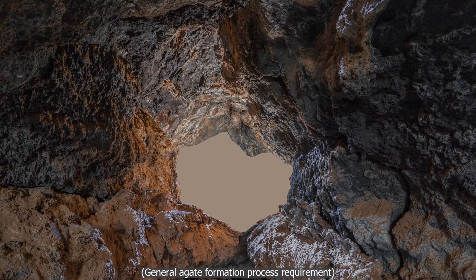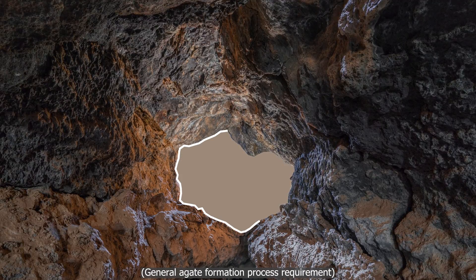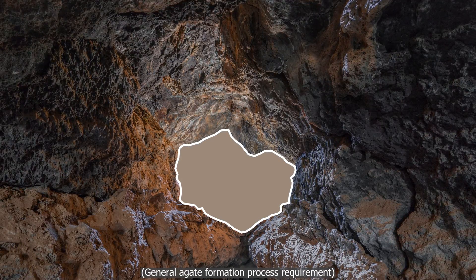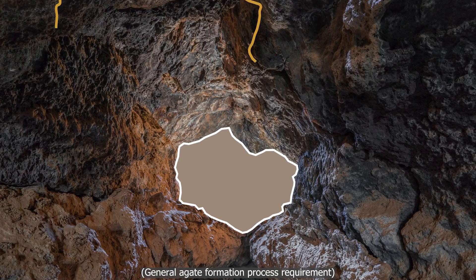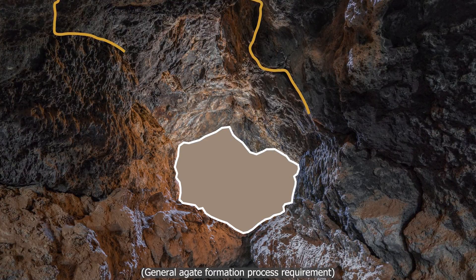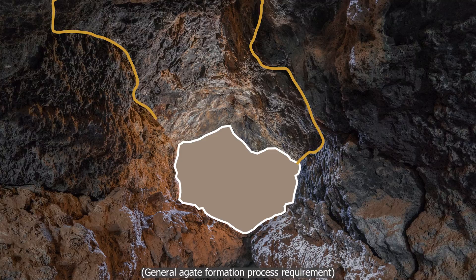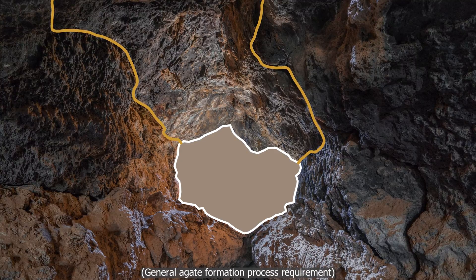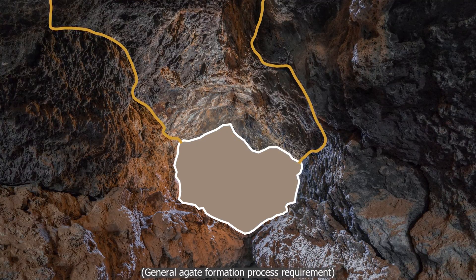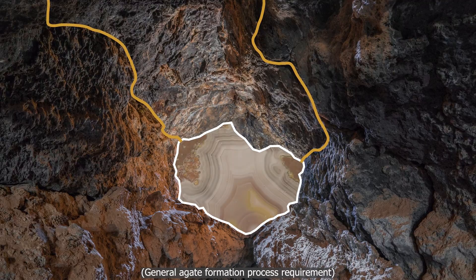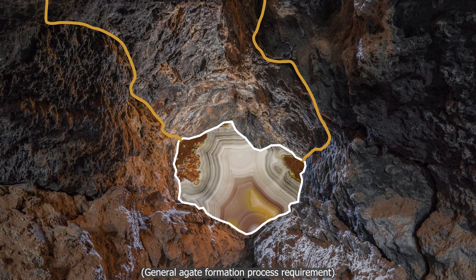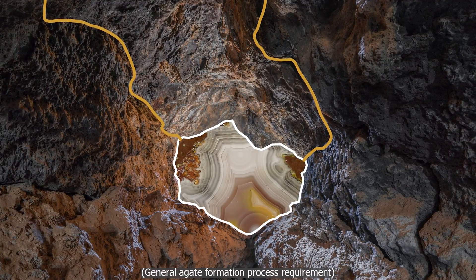Agates can form in any kind of environment where there are empty cavities in rock. Through micro-fissures under hydrothermal conditions, the silica gel gets transported into these empty cavities. Basically, any host rock that provides empty space is where the silica fluid can enter and create agate.